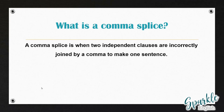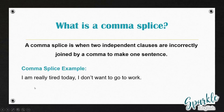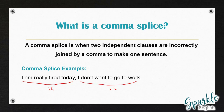So going back to a comma splice, a comma splice happens when two independent clauses are incorrectly joined by a comma to make one sentence. For example: 'I am really tired today, I don't want to go to work.' This is a comma splice. 'I am really tired today' is an independent clause, and 'I don't want to go to work' is also an independent clause. A comma is not strong enough to connect these two sentences together — we need something stronger.